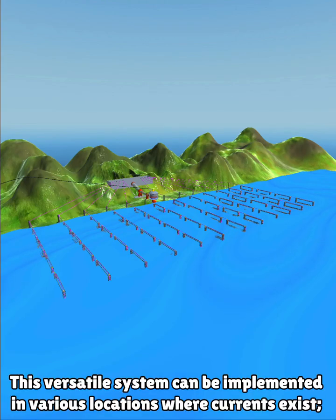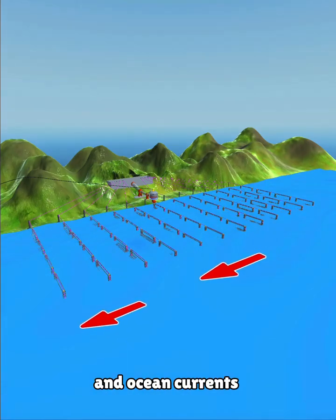This versatile system can be implemented in various locations where currents exist, such as rivers, channels, straits, and ocean currents.